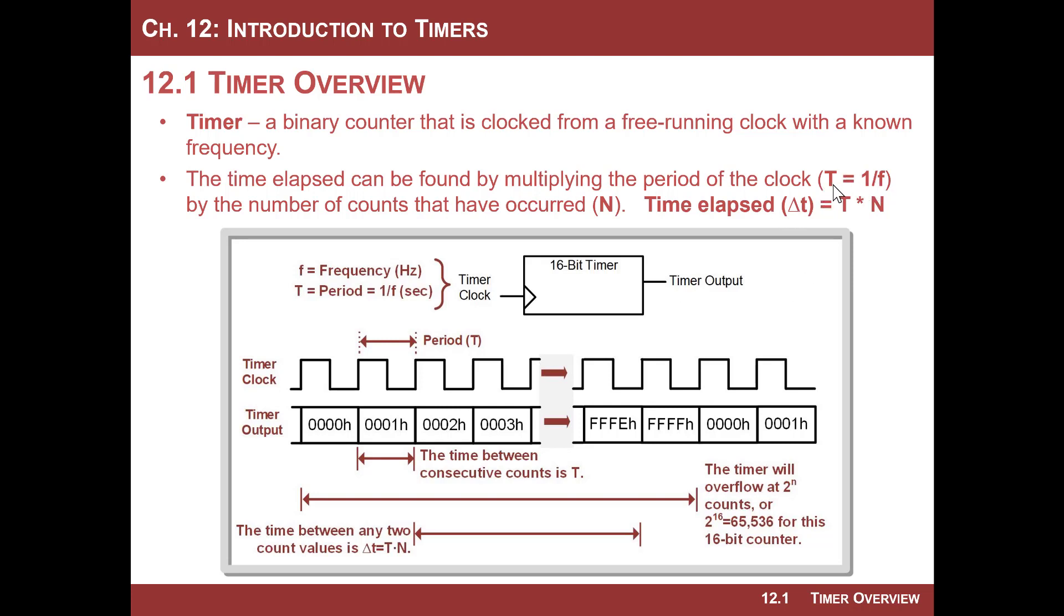So we can do this pretty easily, actually. So if we know the frequency, the period of the clock frequency is simply 1 over f. And so that's T. So every clock that occurs, or a clock occurs every T seconds.